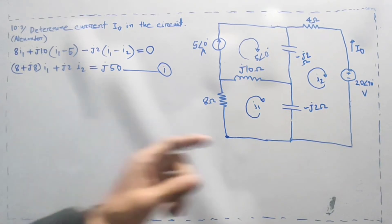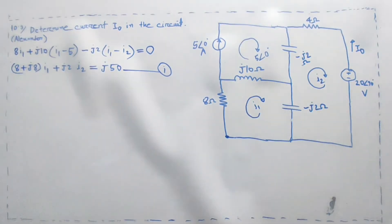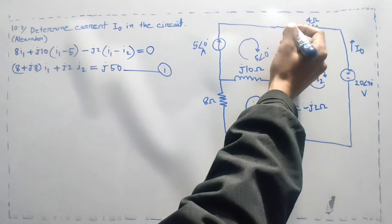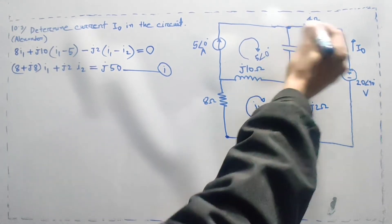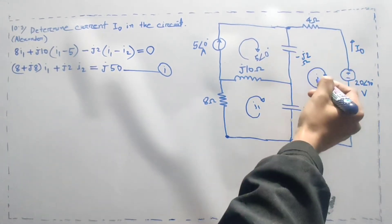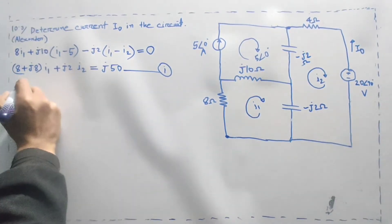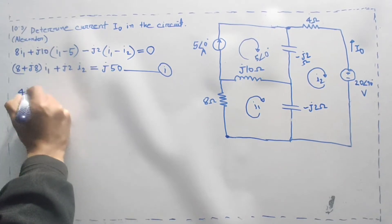Loop number 2: loop 2, number loop 1 point. Loop 2: 4·i2, 1 point.